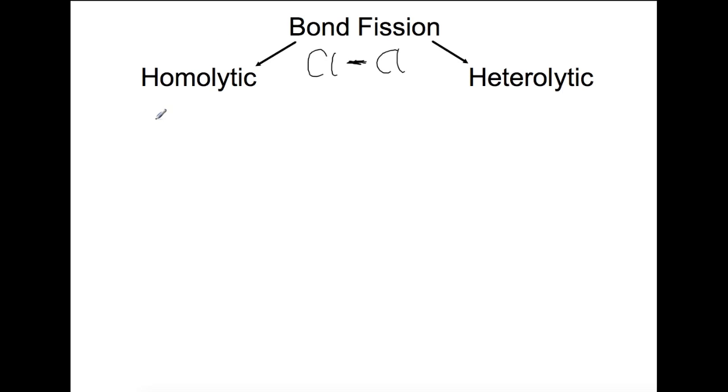So homolytic is where this is an even split. And this is what would happen in the initiation step of a free radical chain reaction which you would have came across in higher last year. So this is where we would take our Cl-Cl and we would produce two Cl radicals. So we've broken that bond evenly and each of them has went back to having one unpaired electron.